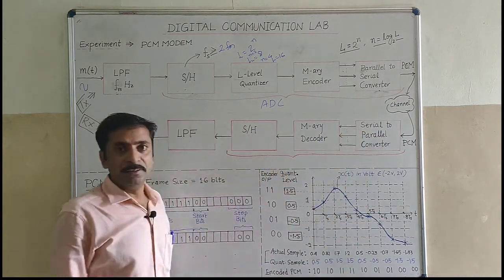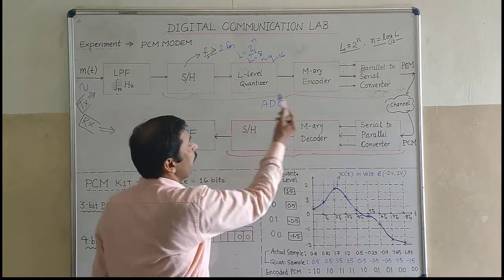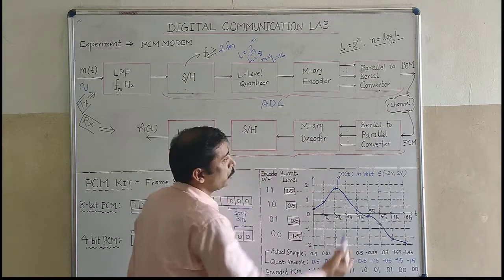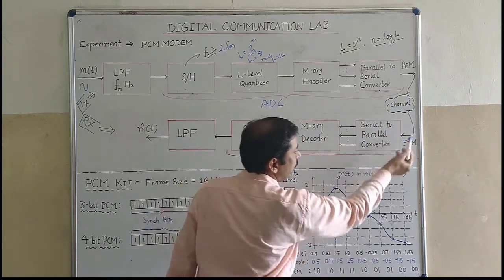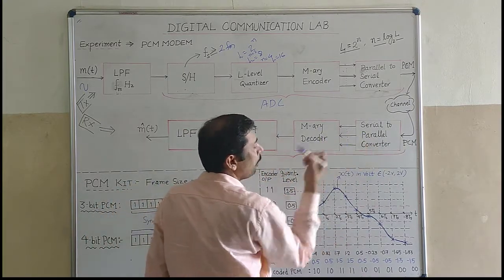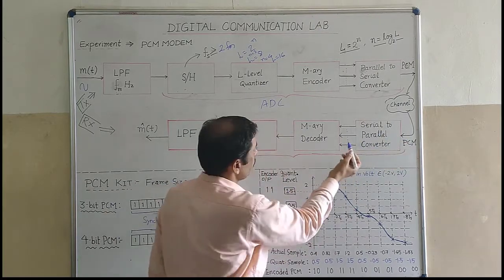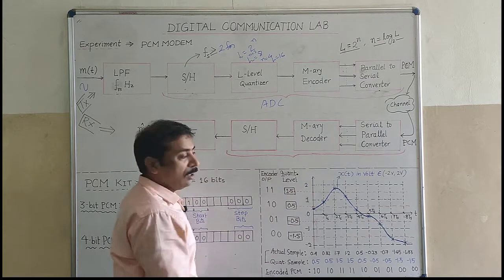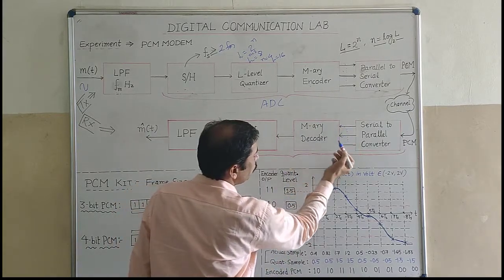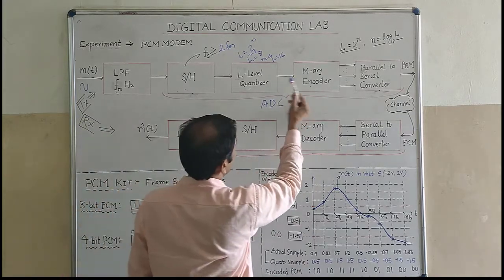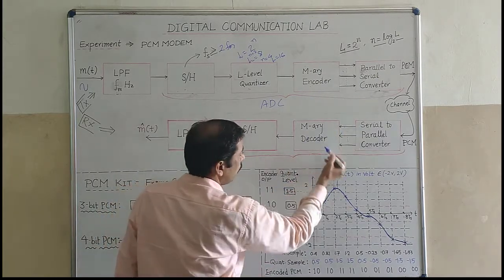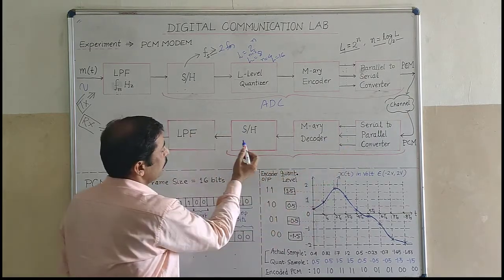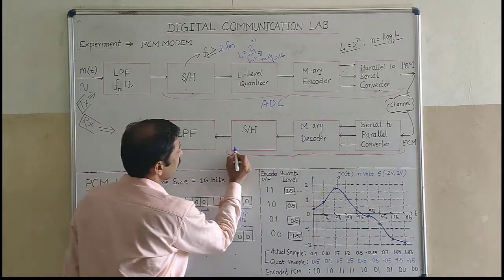Now let us discuss the demodulator. Whatever operations I perform at the transmitter end, I have to reverse them at the receiver. I have a serial-to-parallel converter because the PCM signal reaches the receiver through one channel, and I convert the serial bits back into parallel using a serial-in parallel-out shift register. Then I use M-array decoding — since I used a binary encoder, I use a binary decoder here. These four binary bits will be represented as one quantized value. The M-array decoder gives the equivalent quantized voltage for the four binary bits, and then the sample and hold circuit generates a staircase approximated signal.